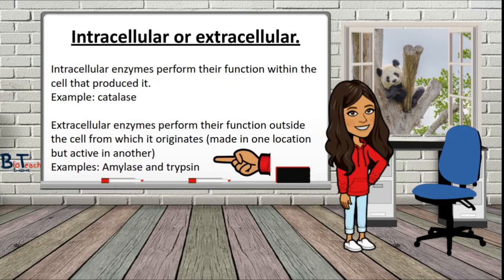Extracellular enzymes function outside of the cell from where they originate — they're made in one location but active in another. Examples include amylase and trypsin. Amylase is a digestive enzyme produced in the salivary glands and pancreas, but it acts in the mouth and small intestine to hydrolyse starch into sugars. Trypsin is a protein-digesting enzyme produced in an inactive form, secreted into the small intestine by the pancreas, and activated there. We'll hear more about trypsin when we look at required practical one.